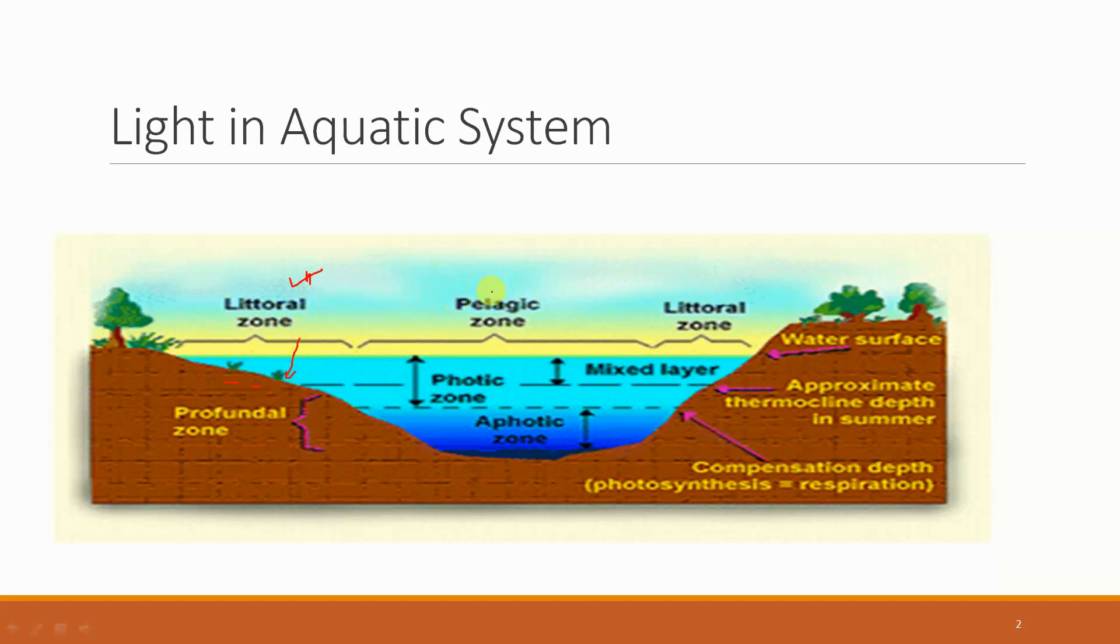Next is the pelagic zone, which is also known as the liminetic zone. This is the zone where the penetration of light is sufficient for phytoplankton growth. These phytoplankton are floating on the water surface rather than being rooted. That is why this is known as the pelagic zone.